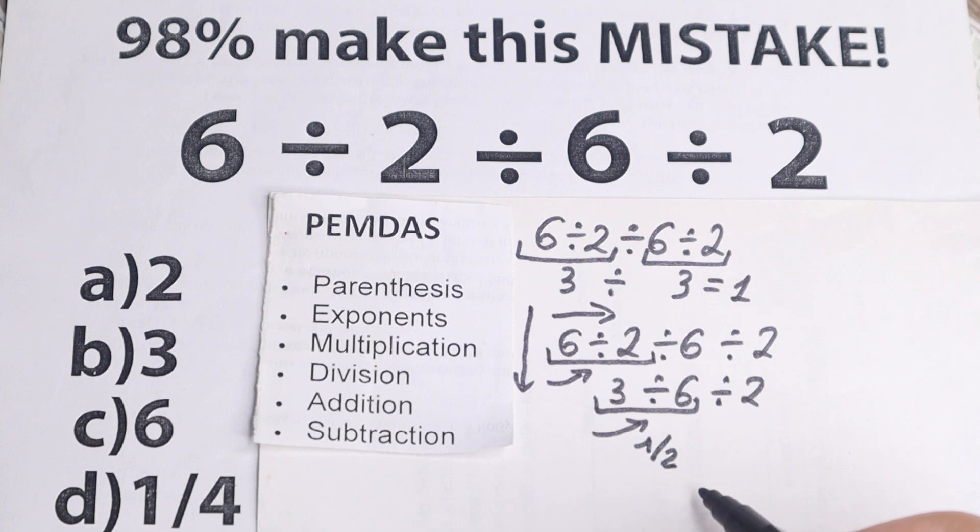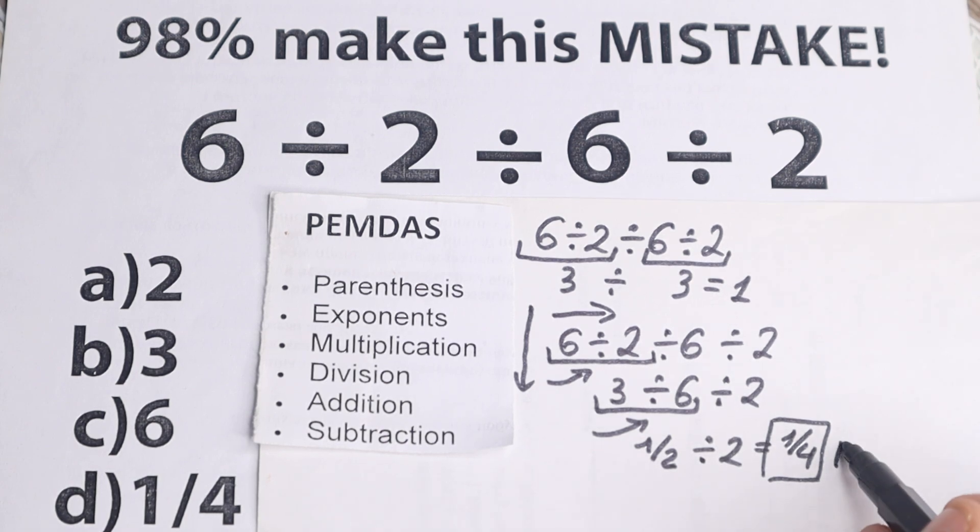And we have 1 half divided by 2, this is our classic regular case, so 1 half divided by 2, this is equal to 1 over 4. And if you are talking about an option, this is option, option D.